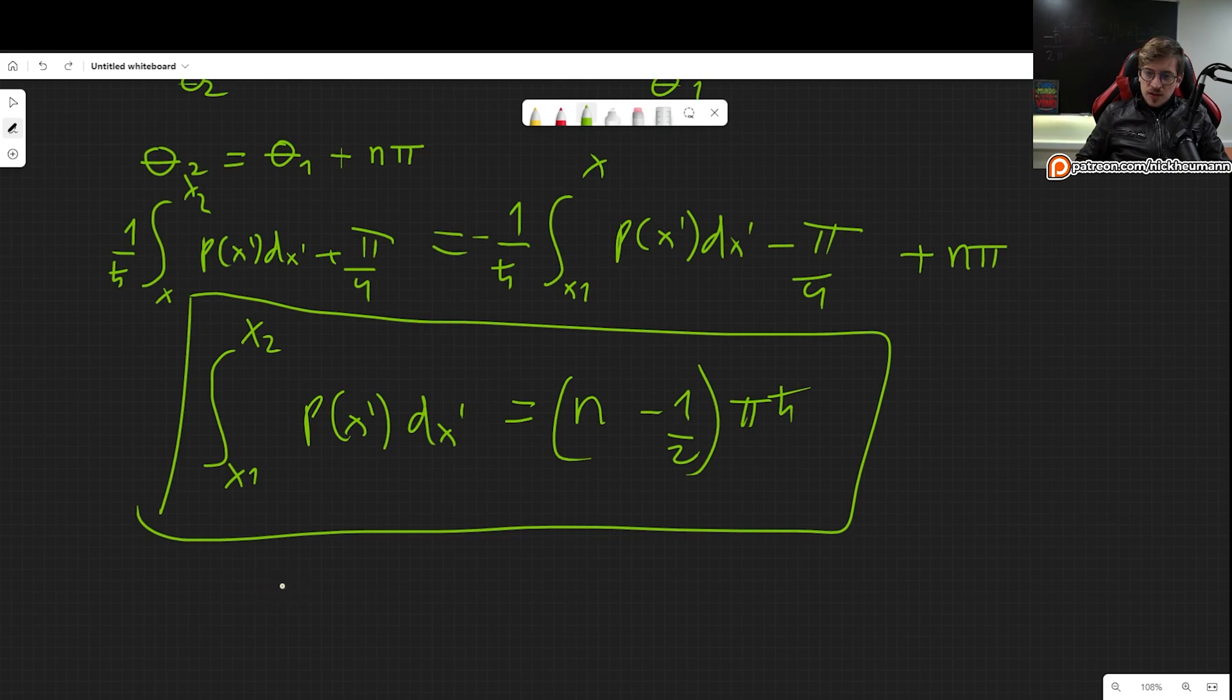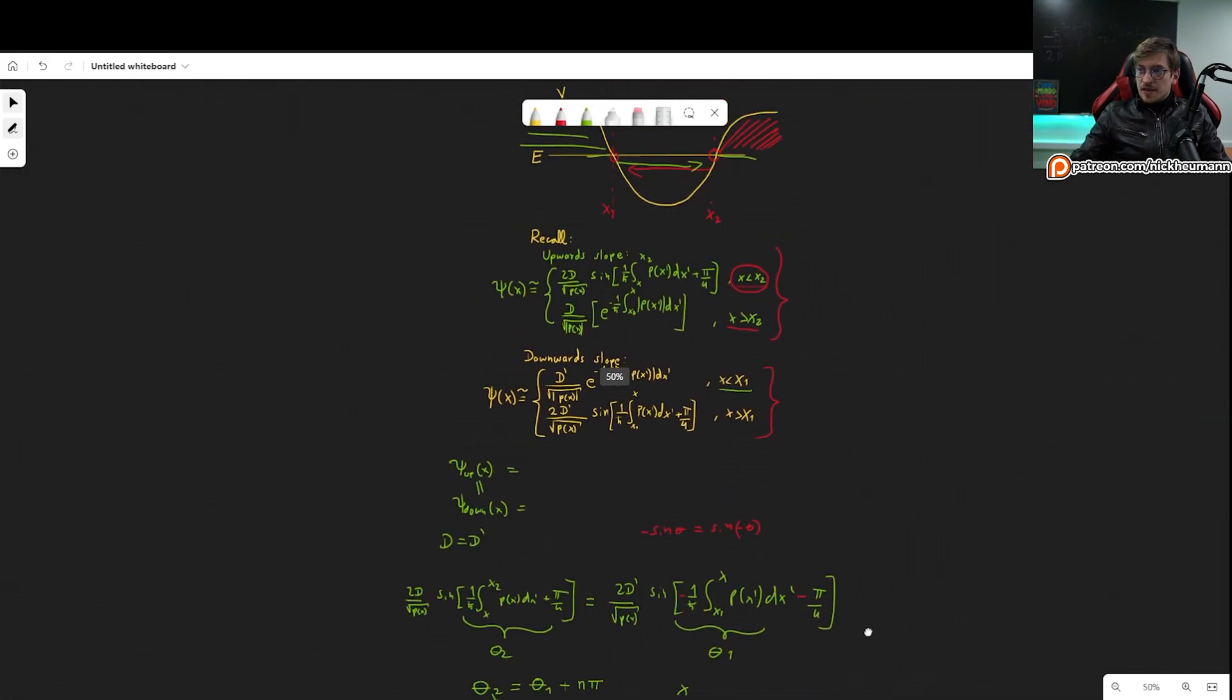This is as far as we can go without giving any concrete example. But here all you have to do is just plug in the particular value of the momentum that you might have, right, 2m times v minus e, and you integrate and you can immediately find the condition for the energy. This is e minus v or v minus e depending on the situation of course.